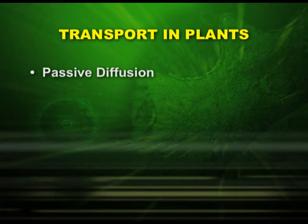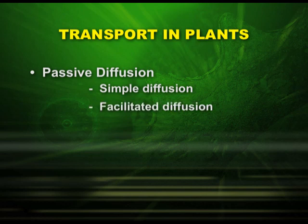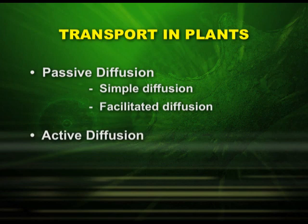Let us see the various ways by which water is transported in plants. There are two important processes: passive and active. The two types of passive transport are simple diffusion and facilitated diffusion, and the second main category is active transport. We are going to see individually how passive transport and active transport takes place.